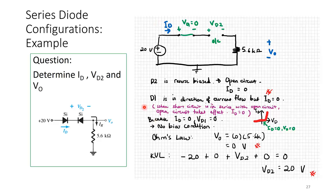Because ID equals 0, VD1 — the voltage across D1 — is also 0, as it is in a no-bias condition, not reverse biased. If you look at the ID vs VD diode characteristics, it sits at the origin — no bias.